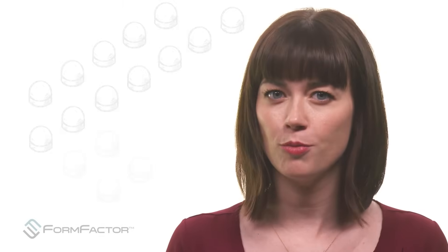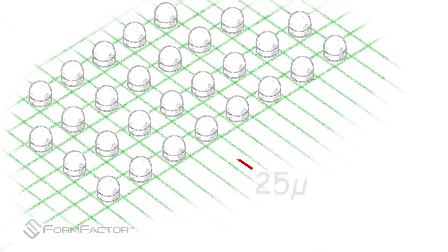It turns out that micro bumps are very small. Only 25 micrometers in diameter. And very close together, only 45 micrometers apart. As such, they require probing equipment that operates with extraordinary precision.